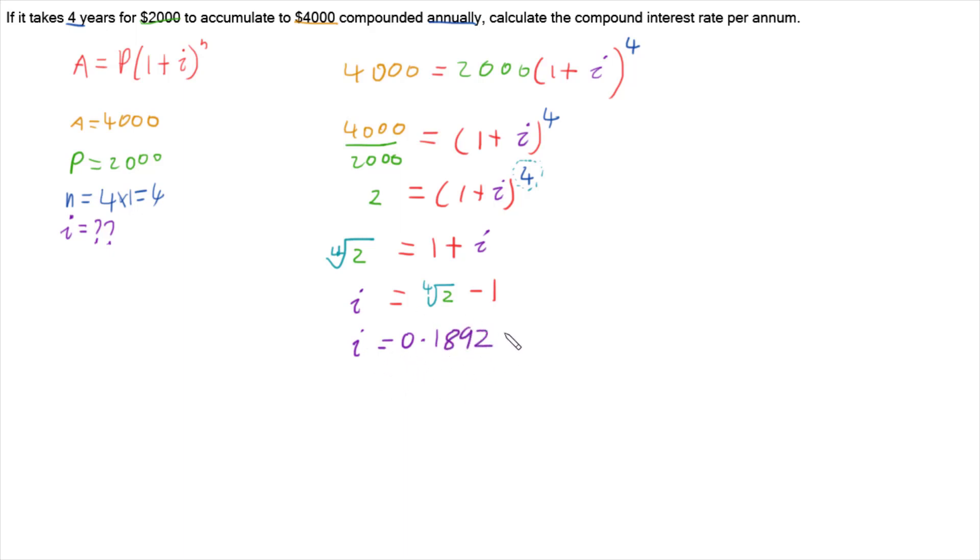But this is a decimal and usually our interest rates are percentages. So I've got to multiply by 100 to give us our interest rate of 18.92 percent.